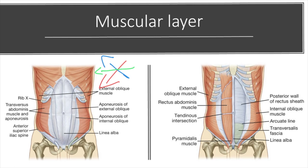All three flat muscles are covered anteriorly and posteriorly by a layer of deep fascia, separate from the superficial fascia of Camper's and Scarpa's. The key fascia to know here is the transversalis fascia, which is deep to the transversus abdominis. As you can see in the picture, the transversalis fascia sits deep to the transversus abdominis and is slightly more developed than the other muscular fascias.